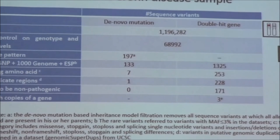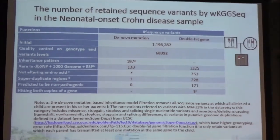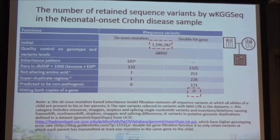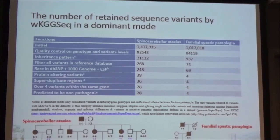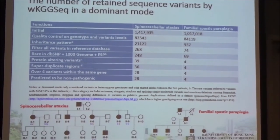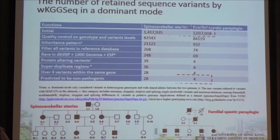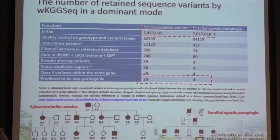In a pedigree of compound heterozygous mutation, WKTG-seq can produce a very short list of three variants from around 1.2 million sequence variants. In two pedigrees of dominant disease, again, WKTG-seq produced a very short list from over 1 million sequence variants.